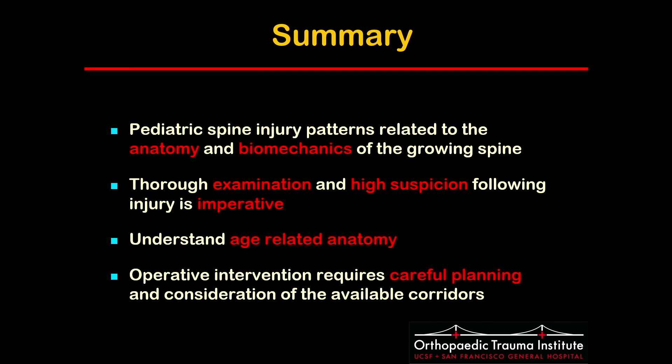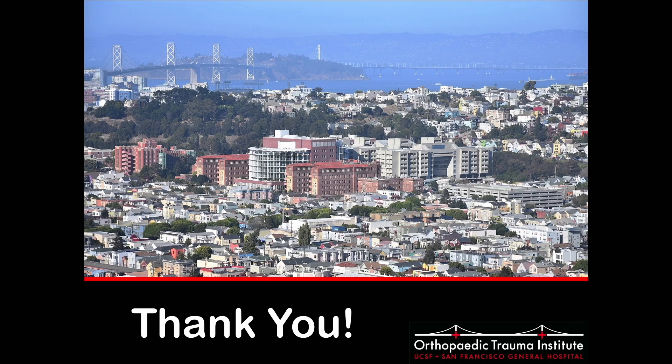In summary, kids are not just small adults and you really need to understand the nuances of their differing anatomy and biomechanics. You need to perform a thorough examination and have a high suspicion for injuries since kids are often poor historians. You need to understand the age-related anatomy and understand that operative intervention requires careful planning on a case-by-case basis. Thank you very much.